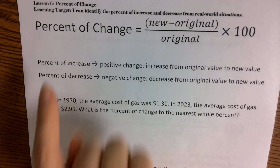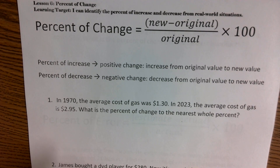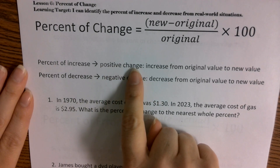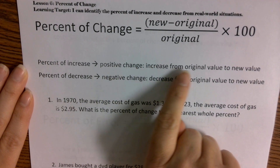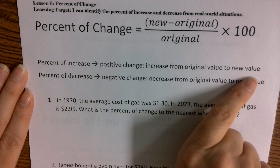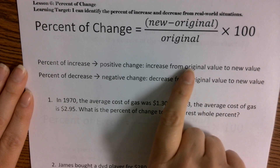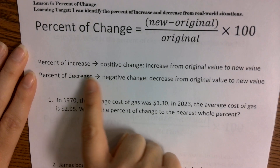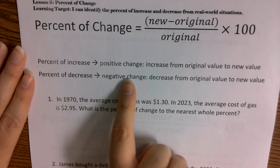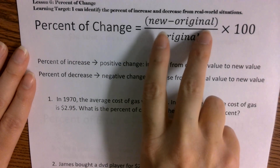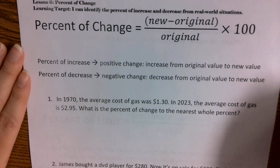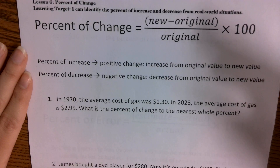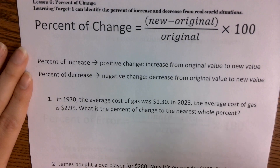If you have a percent of increase, you're going to have a positive change — you're increasing from the original to the newest value. If it's a percent of decrease, you're going to see a negative change. When you subtract new minus original, you'll get a negative value — that means you had a percent decrease, where your original went down to the new value.